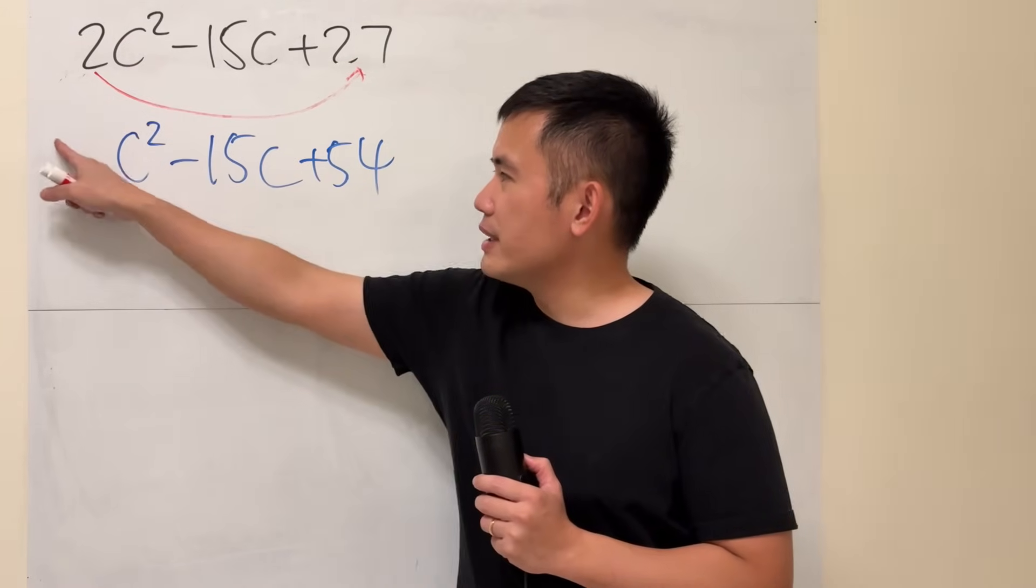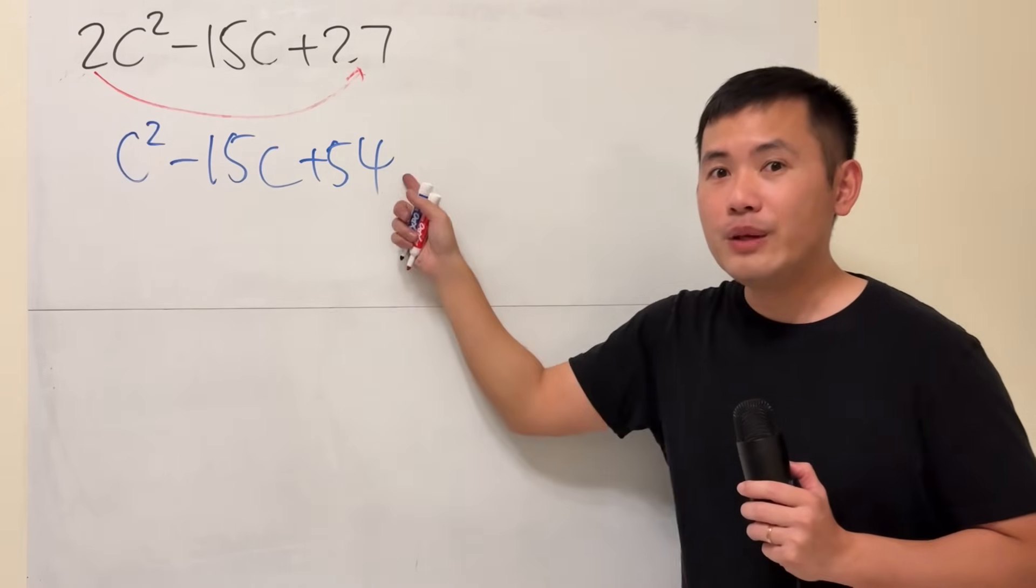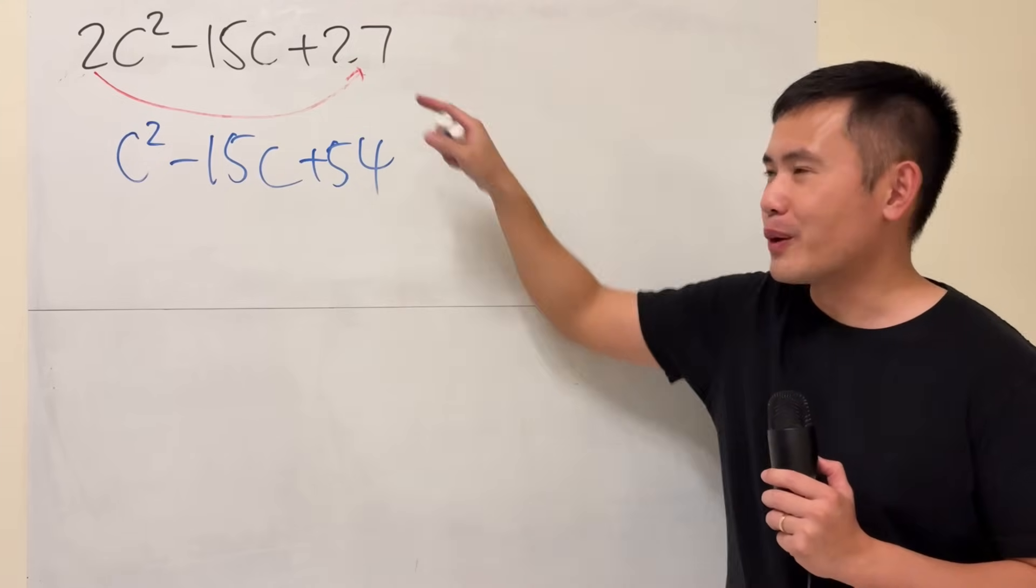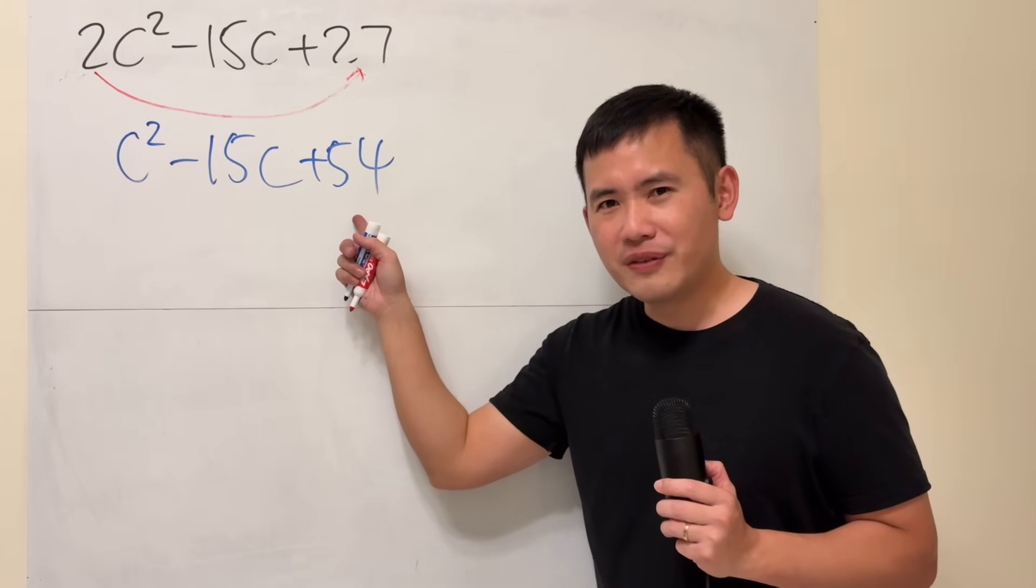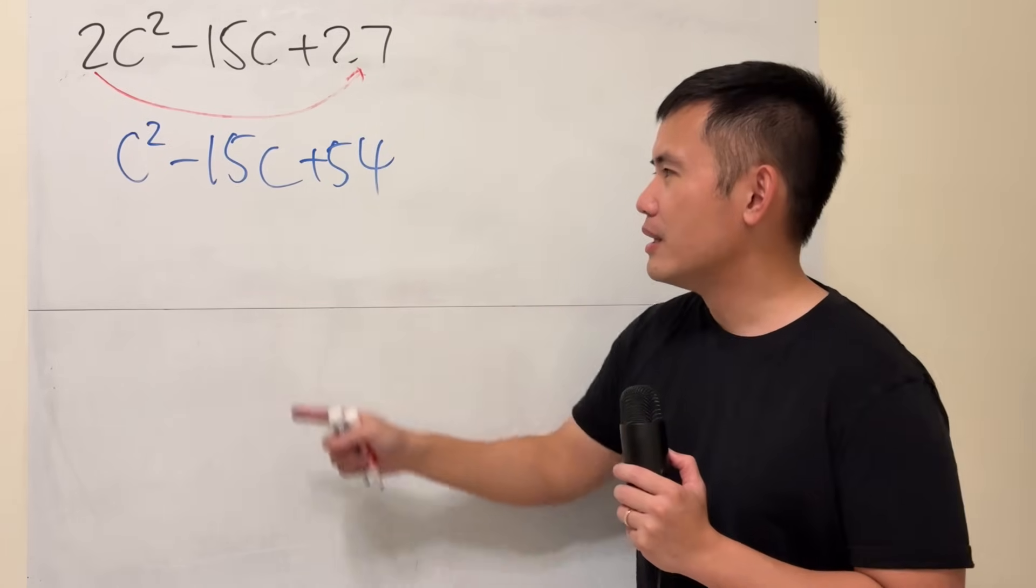Notice I didn't put on equal sign because this is not equal to this, right? But it will help us factoring the original trinomial. Just have a look. Isn't this much easier to factor? Yes, right? Okay.